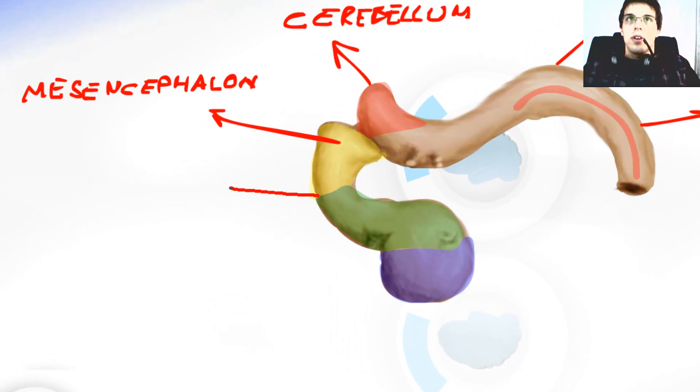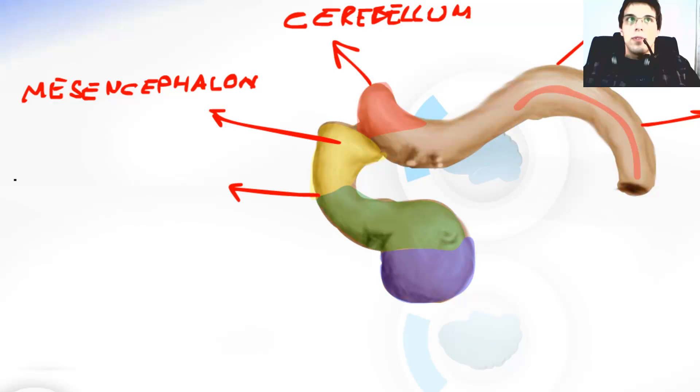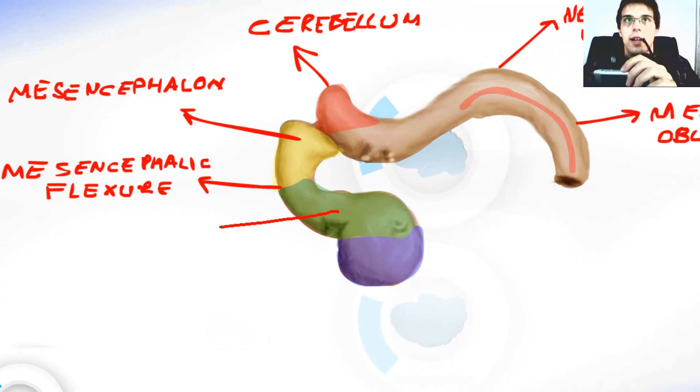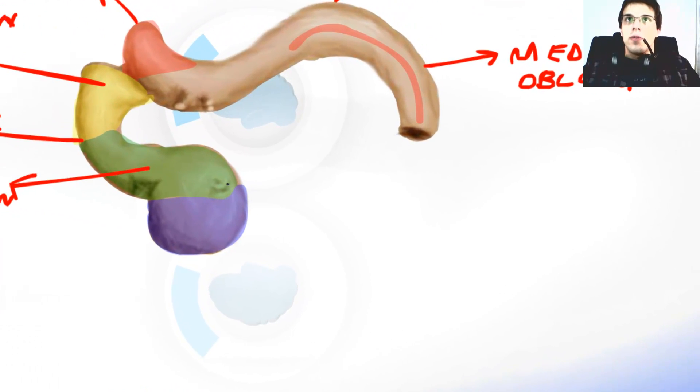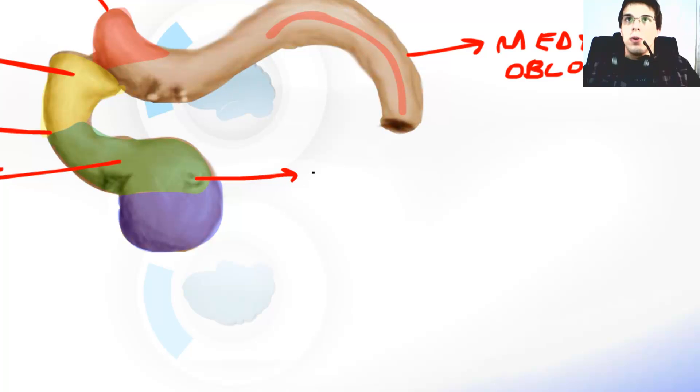Then this curvature over here is the mesencephalic flexure. And then we had the diencephalon. On there we can see the first sign of eye creation, it's called the optic cup. And then we had the telencephalon.